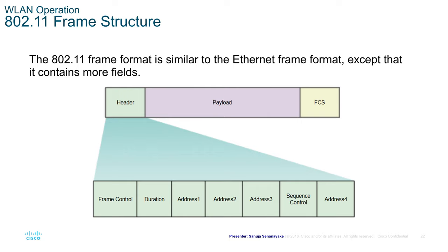802.11 frame structure. The 802.11 frame format is similar to the Ethernet frame format except that it contains more fields. Similar to regular Ethernet frames, the 802.11 wireless standard frames have a header, payload, and FCS.